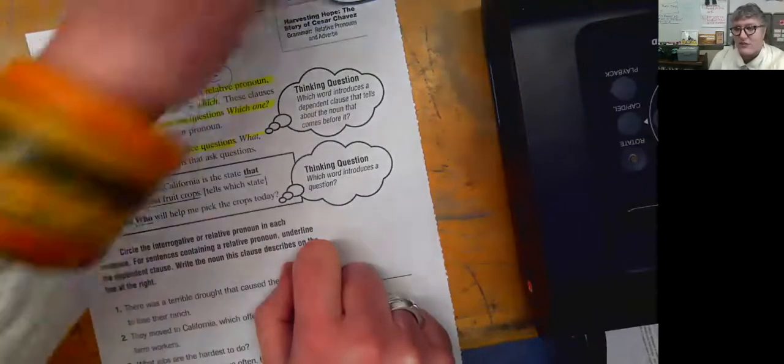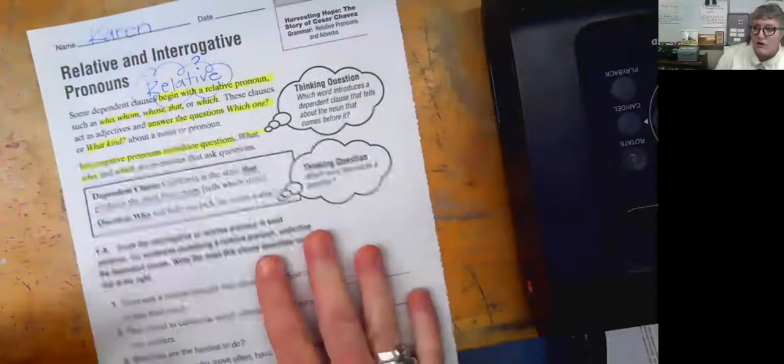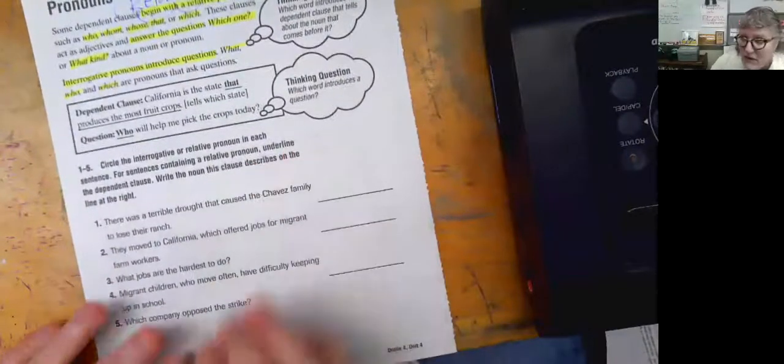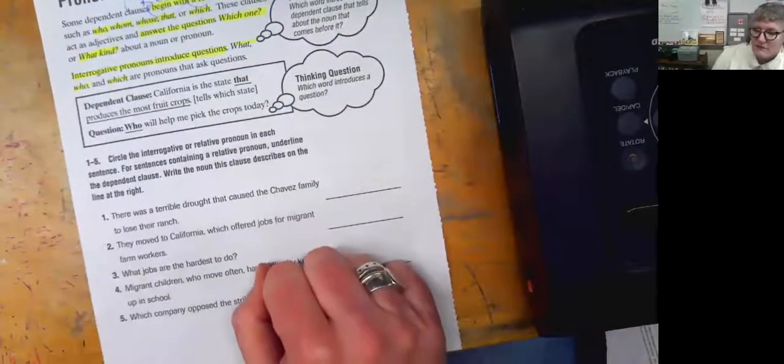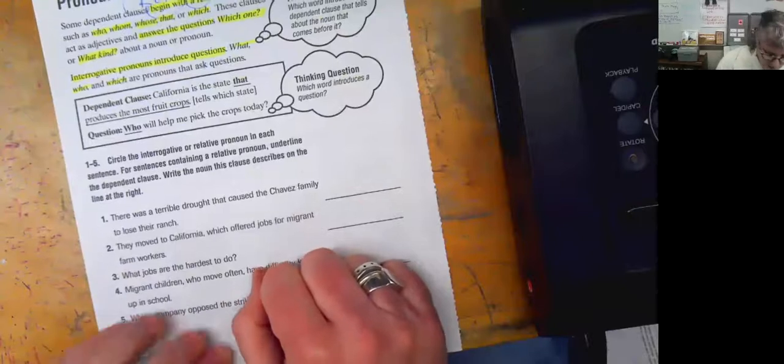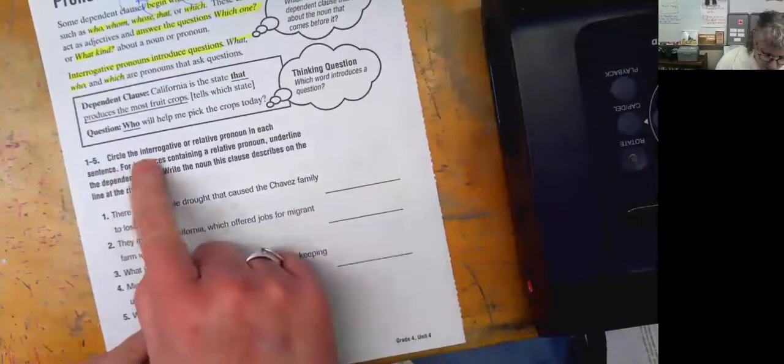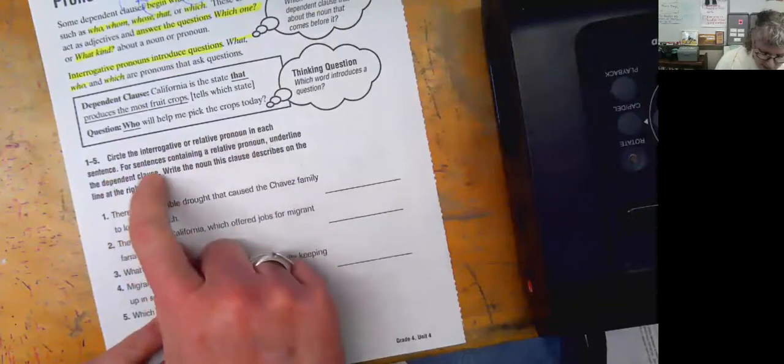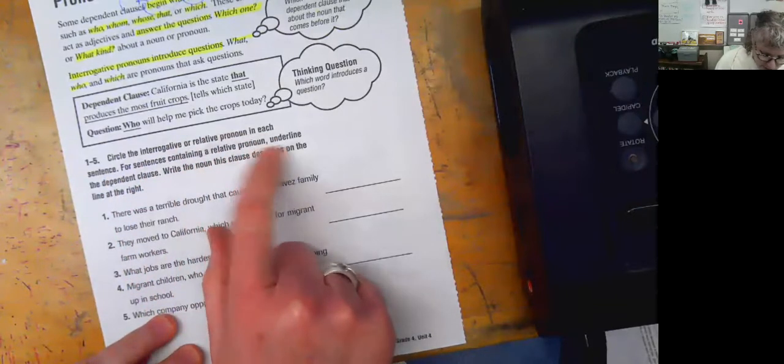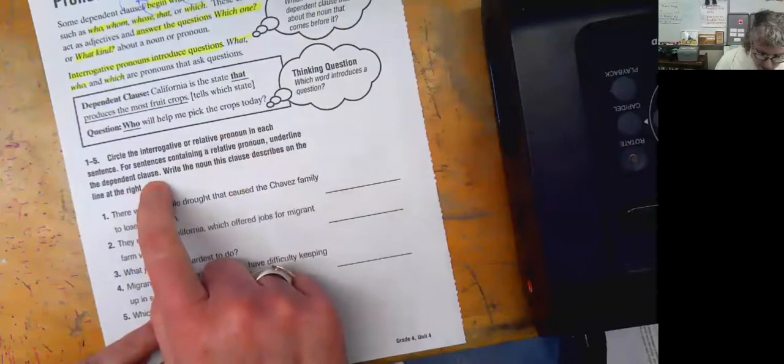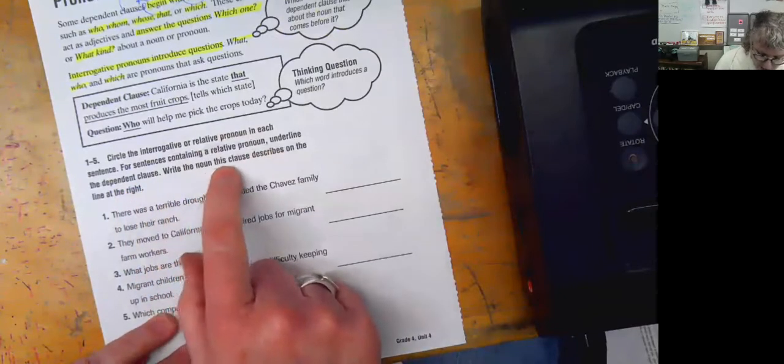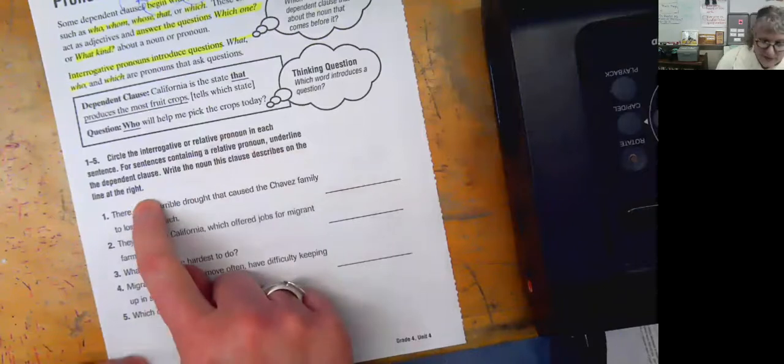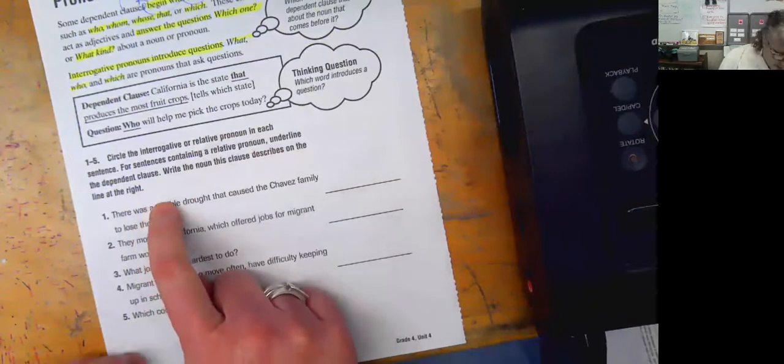Now this is going to be kind of tricky. So I think, again, we're going to do all of these together because they are a little bit challenging, even challenging for me. So we're going to circle the interrogative or relative pronoun in each sentence. For sentences containing a relative pronoun, we're going to underline the dependent clause. We're going to write the noun this clause describes on the line at the right. Okay, so this is a lot of tasks.